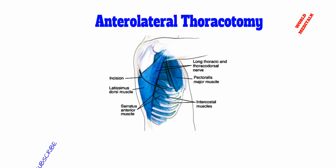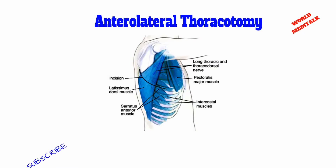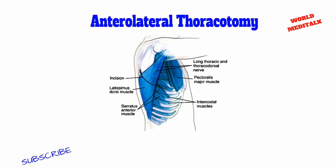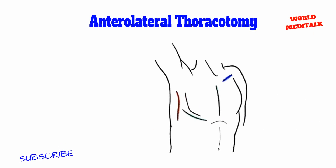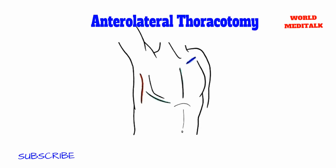It may be performed through the 5th intercostal space according to indication. The following structures can be accessed by this incision: the heart, hilum of the lung, parenchyma of the lung, and the ascending aorta.